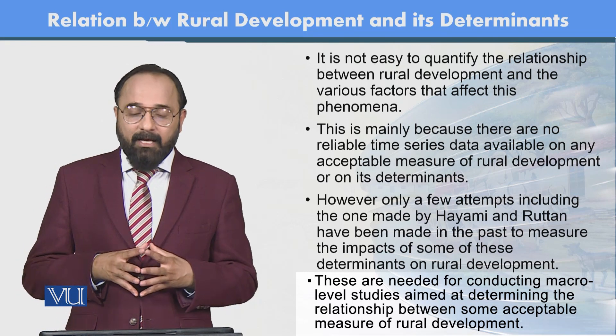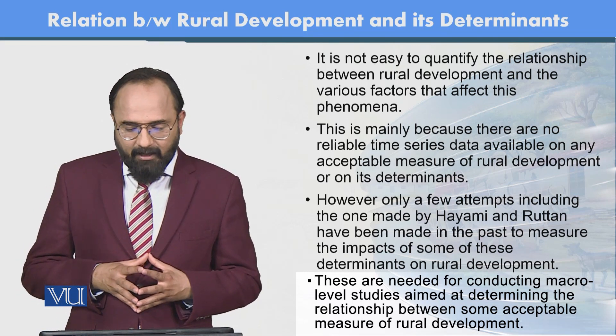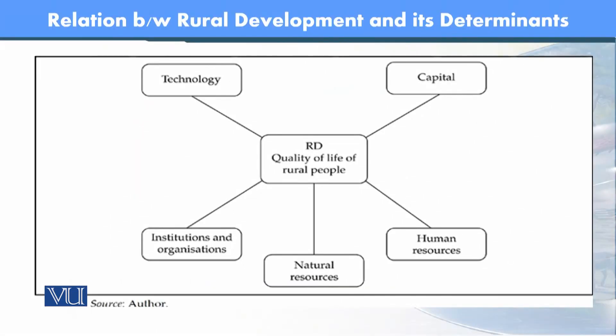Rural development کا determinants کے ساتھ relationship دیکھیں تو: rural development یعنی quality of life of rural people — traditional سے progressive way کی طرف move کرنا — اس پر capital، human resources، اور natural resources سب effect کرتے ہیں اور ان کا آپس میں relationship بنتا ہے۔